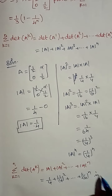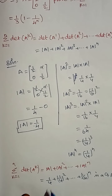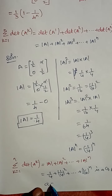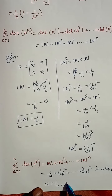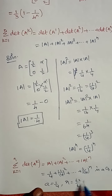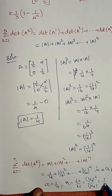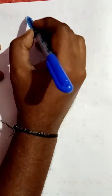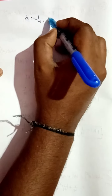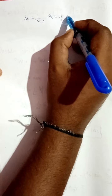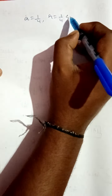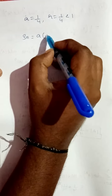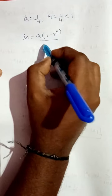This is in the form of a geometric progression. First term a is equal to 1/4, and r is equal to t2 divided by t1, so (1/4)^2 divided by 1/4 gives r equal to 1/4. Since r equals 1/4, r is less than 1.